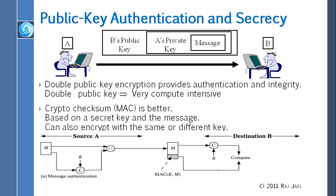Instead, what we do is get a hash or checksum, called a crypto checksum, where K is a secret. We concatenate it to the message — the message is sent in clear, though it's trivial to encrypt it optionally. At the end of the message we have what is called a message authentication code or MAC. The receiver can do the same checksum using the same key and compare to verify it gets the same checksum.